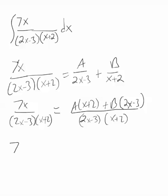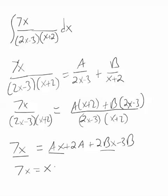So the denominators match up perfectly. I just got to force the numerators to match up. So in order to do that my 7x must equal Ax plus 2A plus 2Bx minus 3B. Again apples with apples, oranges with oranges. So here's some apples, there's some apples.